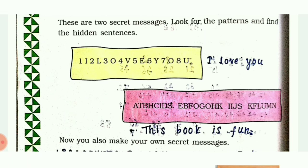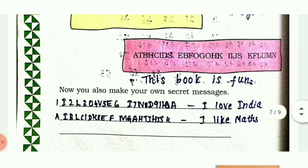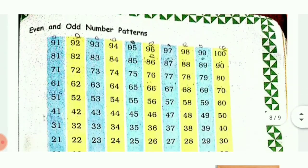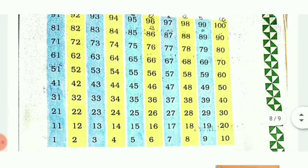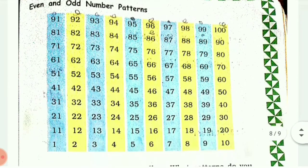Now you can also make your own secret messages. I have written 'I love India' and 'I love Maths.' In the first one I inserted numerics 1, 2, 3, 4, 5 between the letters. In the second one I inserted alphabets. The yellow color represents even numbers - what patterns do you see in these numbers? Continue the same pattern and fill in the blanks.